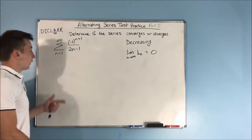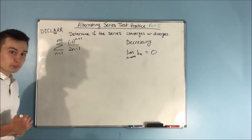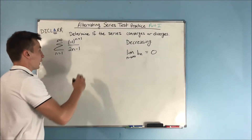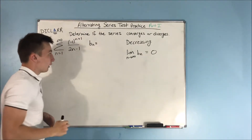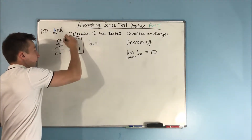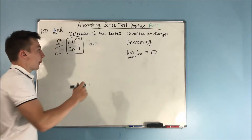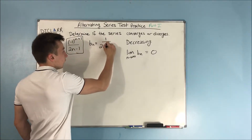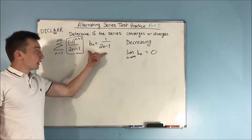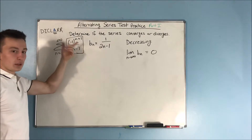Our next problem is the sum from n equals one to infinity of negative one to the n plus one, over two n minus one. The first thing we need to do is figure out B sub n. B sub n is just this part of A sub n — we take out the negative one to the n plus one, since that's what makes this an alternating series. So B sub n equals one over two n minus one.